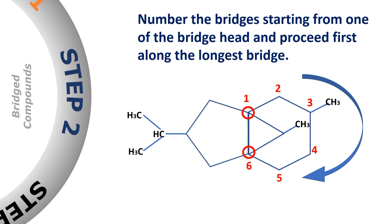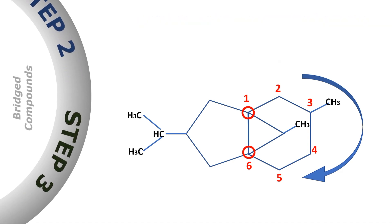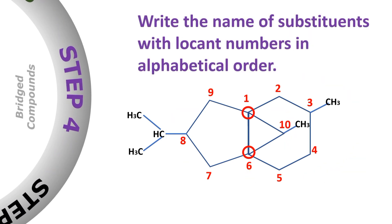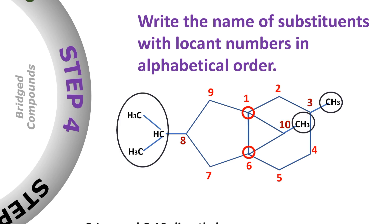After reaching the second bridge head, we will move along the second longest bridge, proceeding back to the first bridge head carbon. After numbering the second bridge, we will move along the third longest bridge. The last bridge is a bond bridge. After the numbering of this bicyclic system, since this system has substituents, we will write the substituents in alphabetical order.